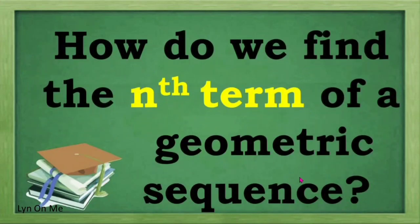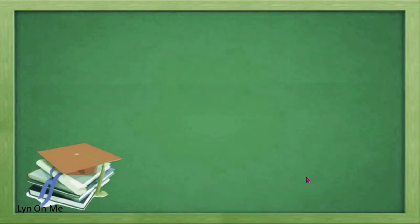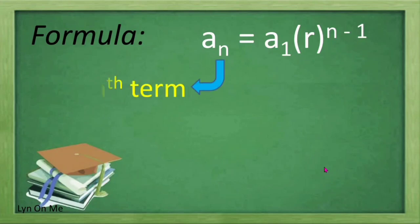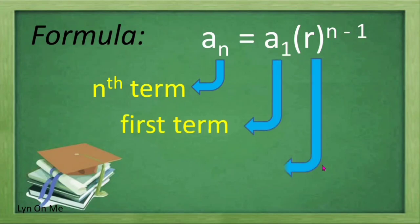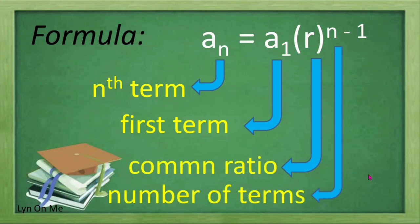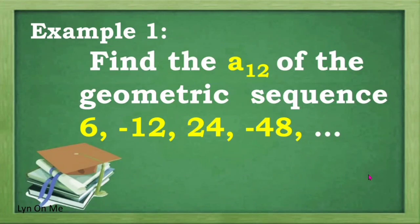So how do we find the nth term of a geometric sequence? The formula is A sub n equals A sub 1 multiplied by R raised to n minus 1, where A sub n is the nth term or last term, A sub 1 is the first term, R is the common ratio, and n is the number of terms.